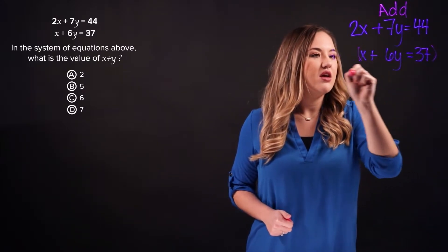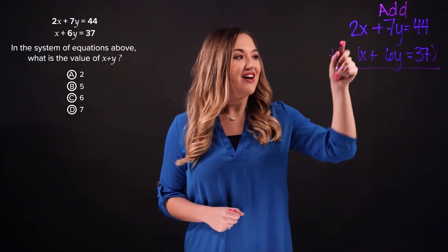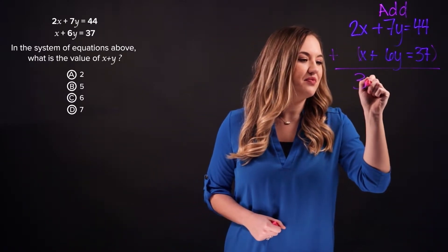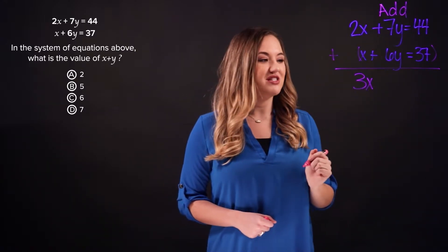Alright, so if we add these two equations together, we have 2x plus x, which is 3x, 7y plus 6y, which is 13y.